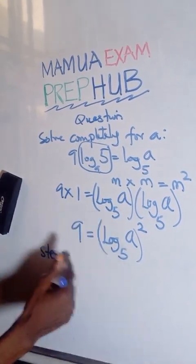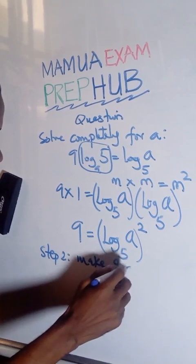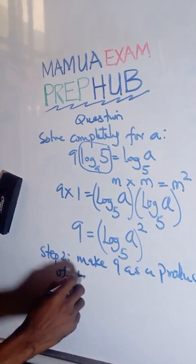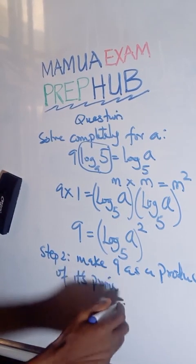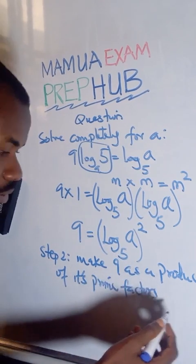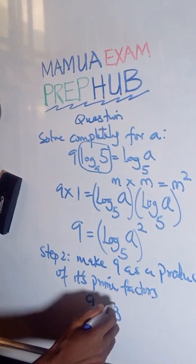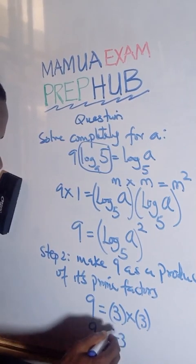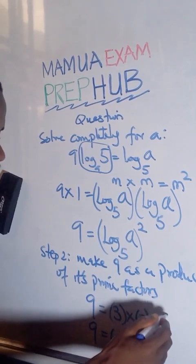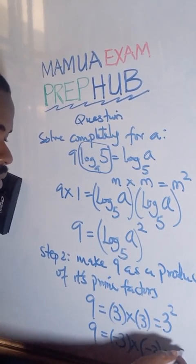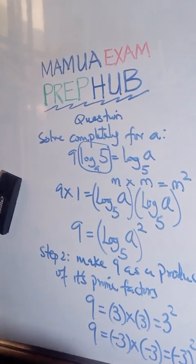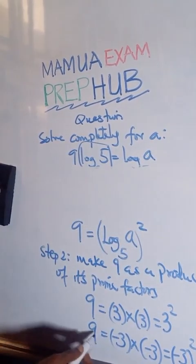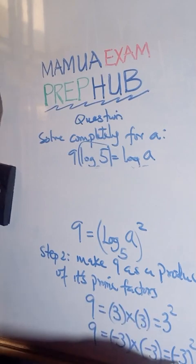we can express 9. The next step, we can make 9 as a product of its prime factors. So 9 also means 3 times 3, or we can say minus 3 times minus 3, which we can write as 3 squared or minus 3 squared. So I'm going to substitute 9 here as either 3 squared or minus 3 squared.